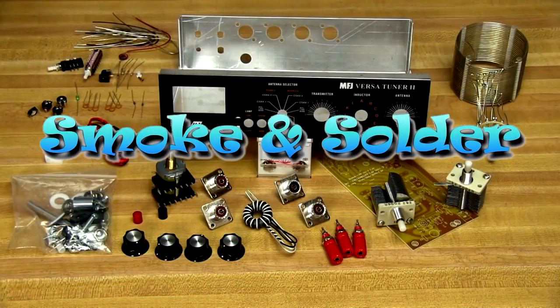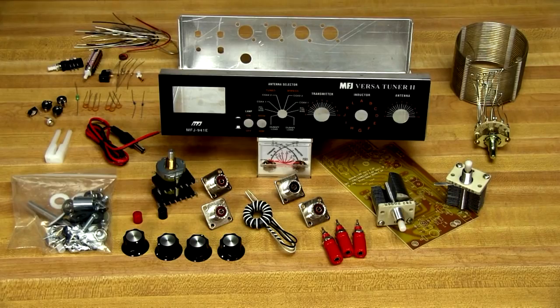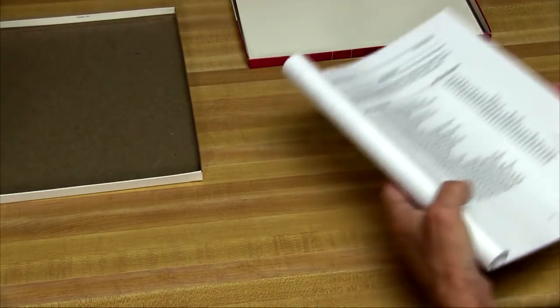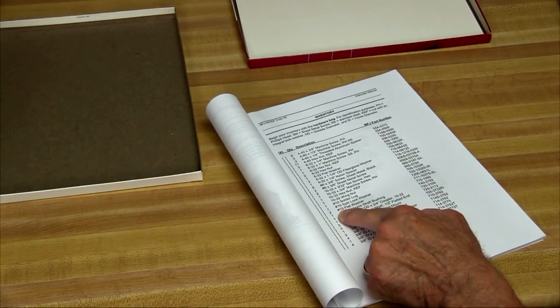This week on Smoke and Solder, we're going to begin building an HF antenna tuner. It's the MFJ VersaTuner II model MFJ-941EK. The first thing we need to do is go over the parts inventory, check them off here as we go and make sure that we've got all the parts here necessary to put this kit together.